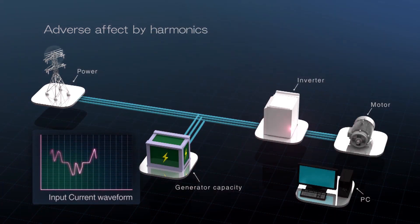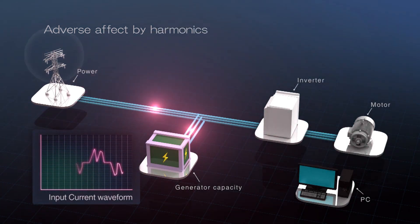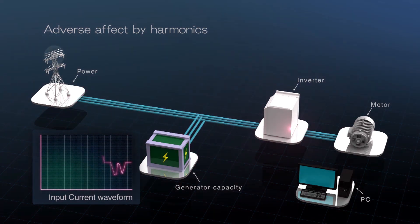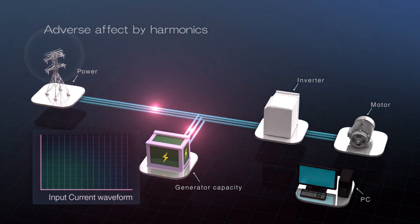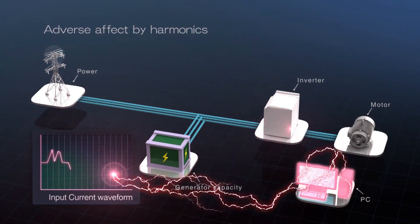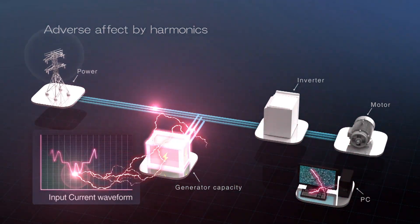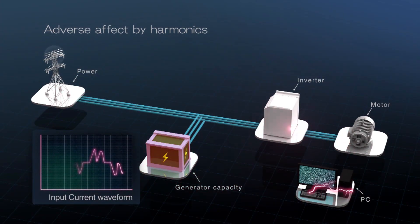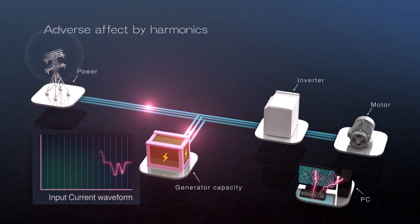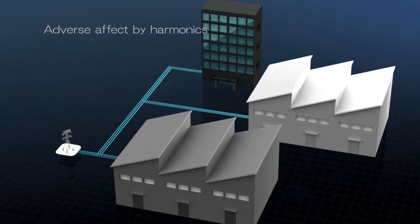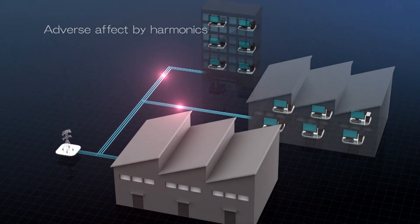When using conventional drives, input harmonics are typical, but other equipment such as precision instruments, power source generators, and even equipment in surrounding buildings can be negatively affected.